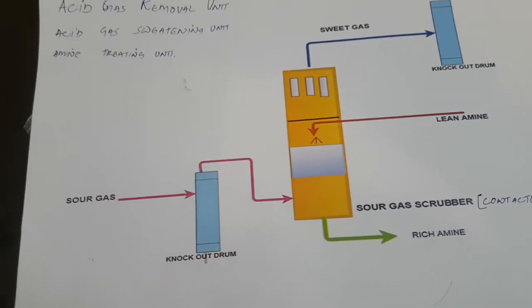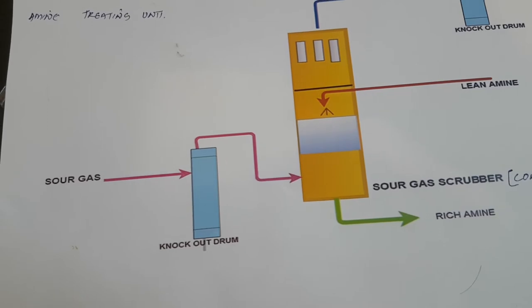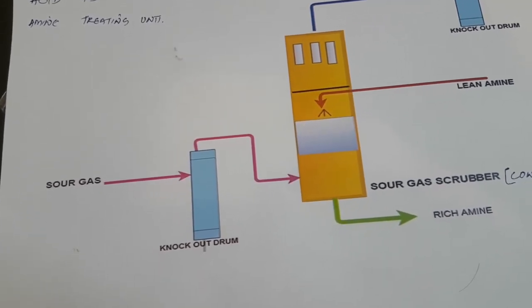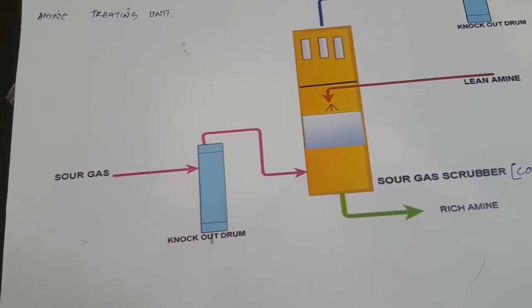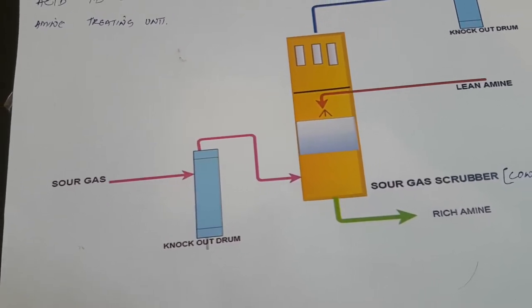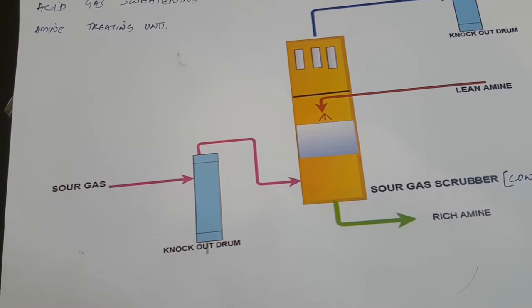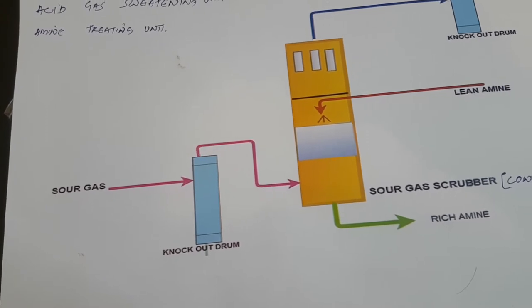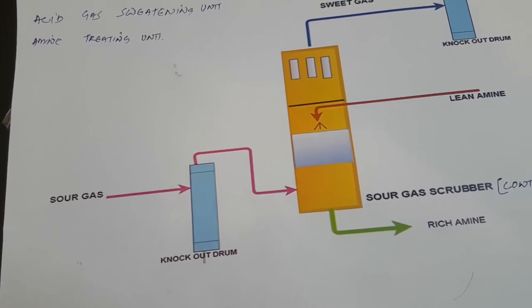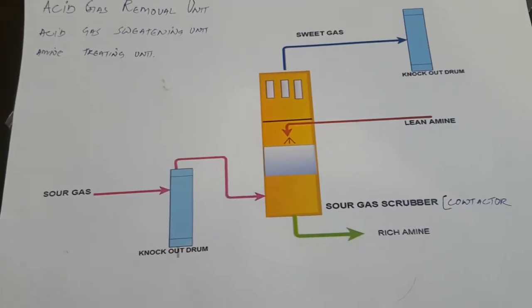The amines used in this unit include methyl diethanolamine (MDEA), which is the most commonly used, as well as monoethanolamine (MEA), diethanolamine (DEA), diglycolamine (DGA), sulfinol, and triethanolamine. These are the amines used for the removal of sour gas.